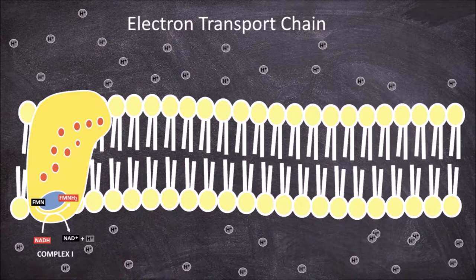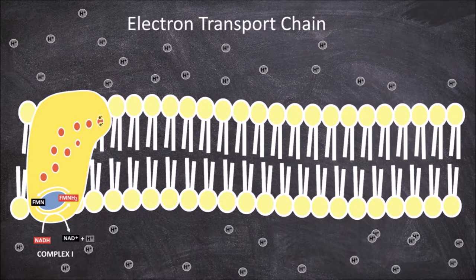In this process, two electrons are transferred from NADH to the reduced flavin mononucleotide FMNH2. These two electrons are then transferred to the chain of iron-sulfur redox centers through the oxidation of FMNH2 back into FMN. These two electrons then move through complex 1 via the chain of iron-sulfur redox centers from a higher energy state to a lower one.